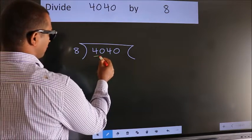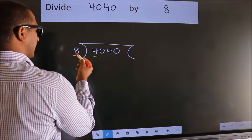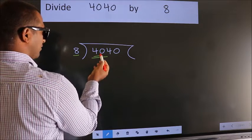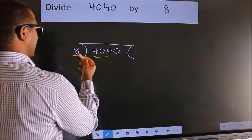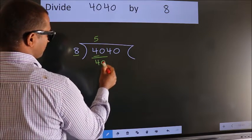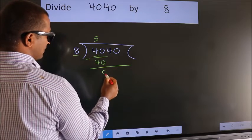Next, here we have 4, here 8. 4 is smaller than 8, so we should take 2 numbers: 40. When do we get 40 in the 8 table? 8 times 5 is 40. Now we should subtract. We get 0.